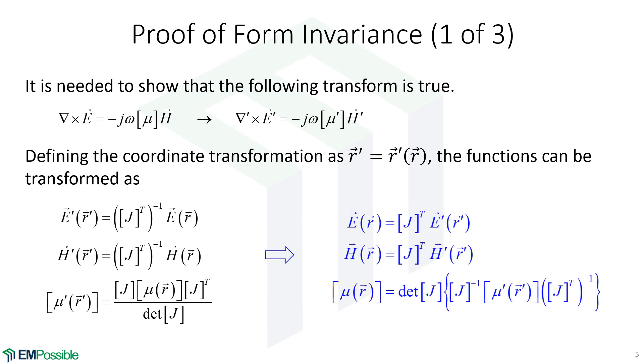The last thing we'll do before we go to the next slide is take these equations and solve them for the terms in the original coordinate system. Because on the next slide, we'll substitute those up into this equation. And so all we're doing is bringing the Jacobian over to the other side of the equation and solving for those functions in the original coordinate system. So we'll use these on the next slide.